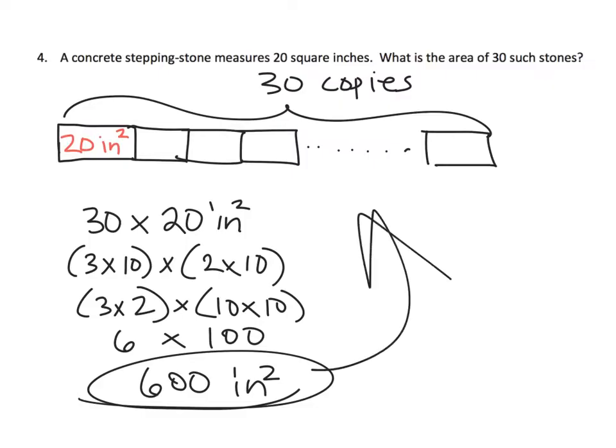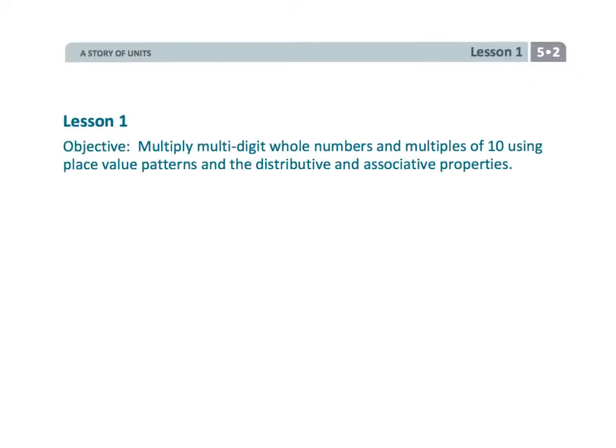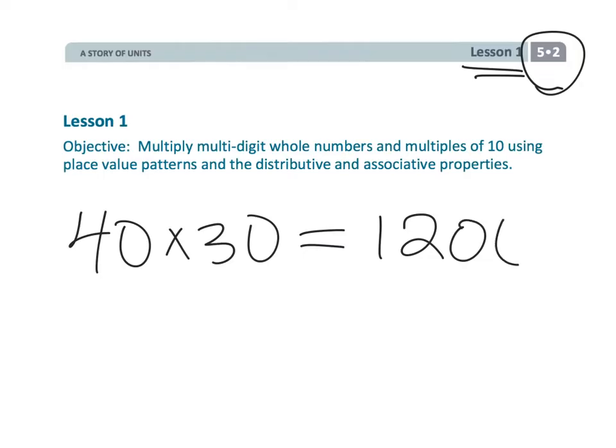That wraps up fifth grade module 2 lesson 1 - the idea of using mathematics to understand the trick of taking the 4 and the 3, multiplying them, and then sticking on those two zeros.